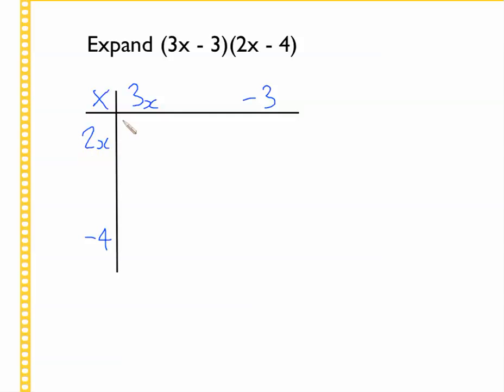Next step, we just multiply out. 2x times 3x is 6x squared. 2x times negative 3, positive times negative gives a negative answer, minus 6x. 3x times minus 4, positive number times negative gives a negative answer, minus 12x. And finally, negative 4 times negative 3. Minus times a minus gives a positive answer, doesn't it? So plus 12.